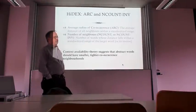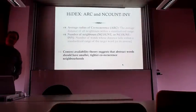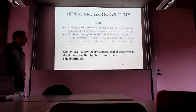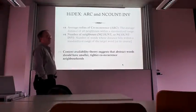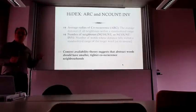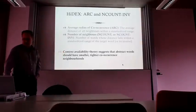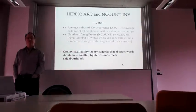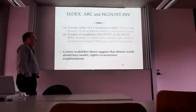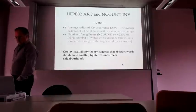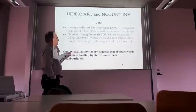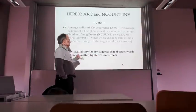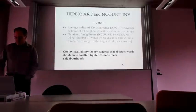There's a theory called context availability theory that says one of the reasons abstract words are hard to access is that they're more dependent upon context than concrete words are. One piece of evidence is that many concrete word effects disappear when you put the words in sentences; the effects are most strongly seen when you show words one by one without context. The co-occurrence model gives you a quantitative way to measure context. If context availability theory is right, we should see that abstract words have smaller, tighter co-occurrence neighborhoods than concrete words when we use our model to measure that.